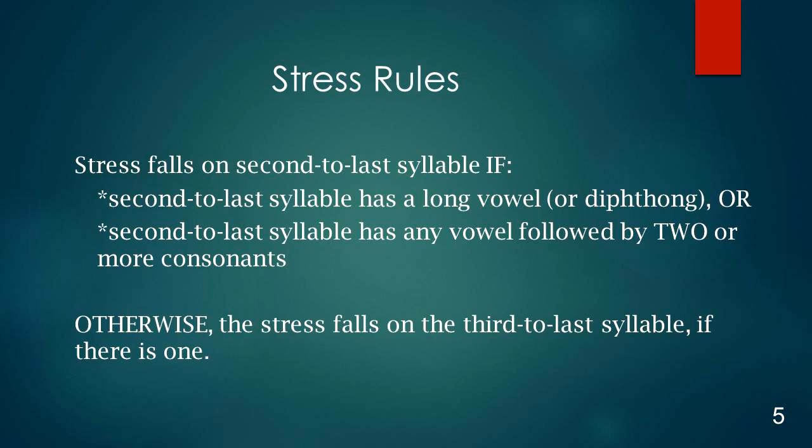To decide whether the second to last or third to last syllable is stressed, look at the second to last syllable first. Specifically, look at the vowel in the second to last syllable. If that syllable has a long vowel or a diphthong, or any vowel followed by two consonants, then that syllable, the second to last one, is stressed. If the second to last syllable has a short vowel followed by only one consonant or no consonant, then the stress goes back onto the third to last syllable.